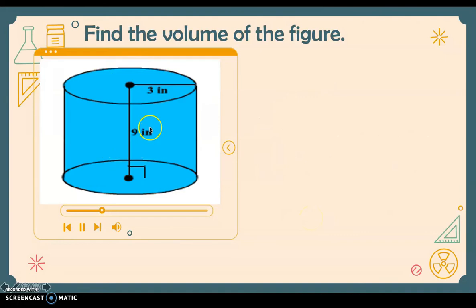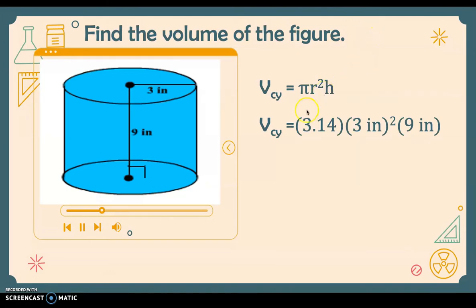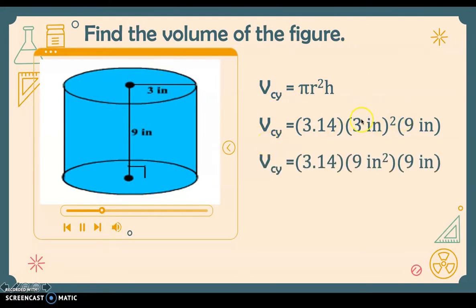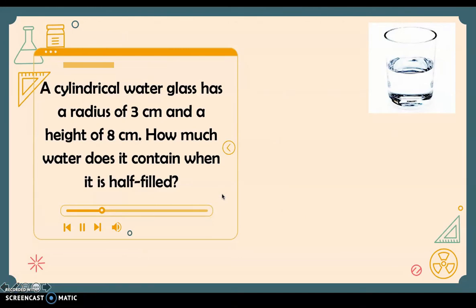Next example: find the volume of a cylinder with a radius of 3 inches and a height of 9 inches. Using the formula pi r squared times h, we substitute 3.14 for pi, 3 inches squared (which gives 9 square inches), times 9 inches for the height. Multiplying the three values gives a volume of 254.34 cubic inches.